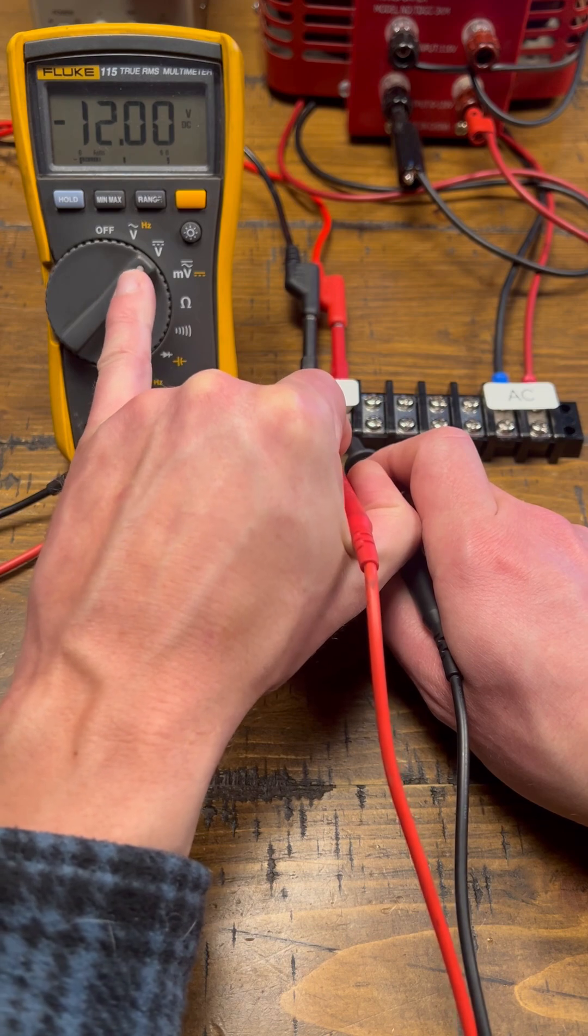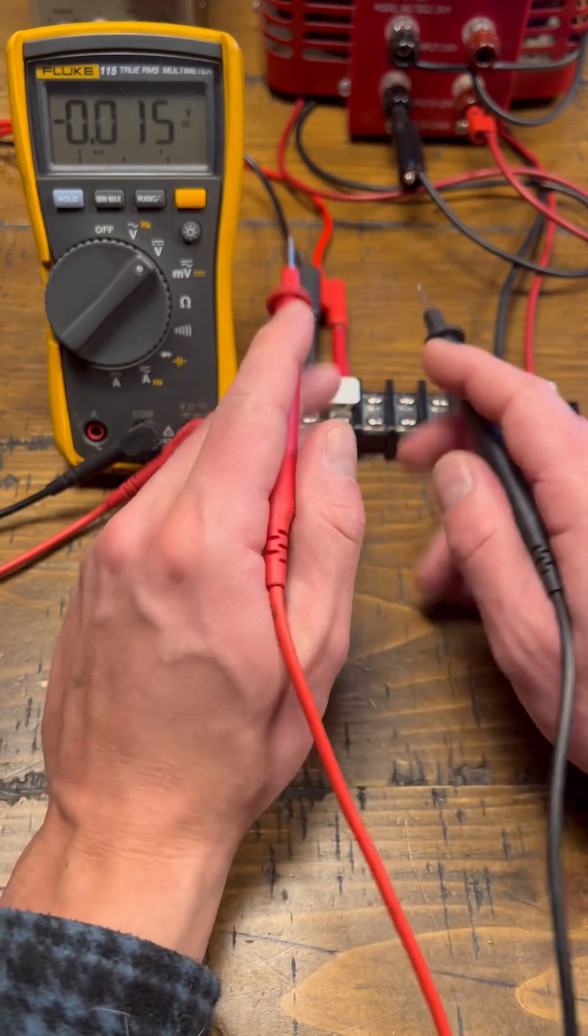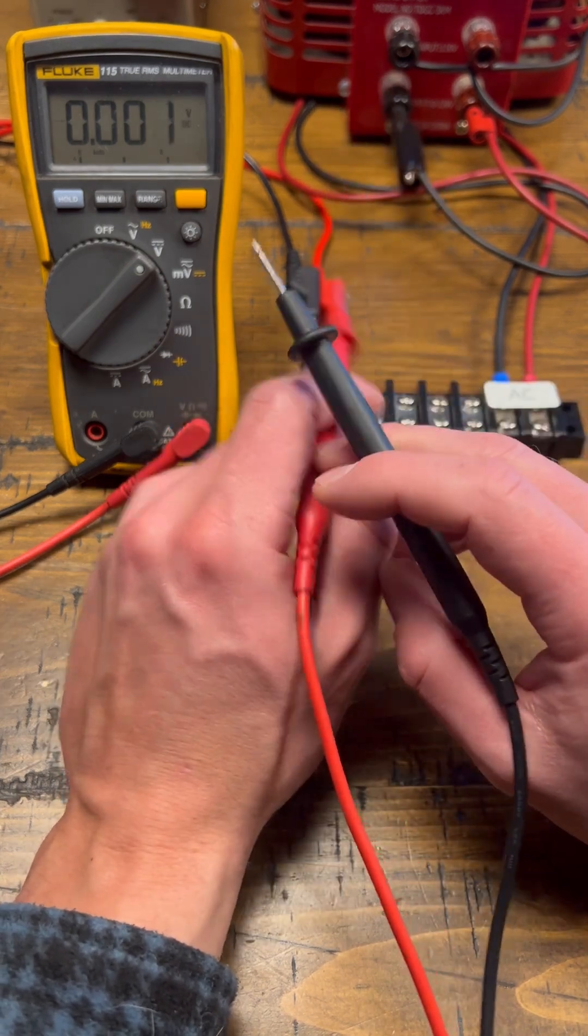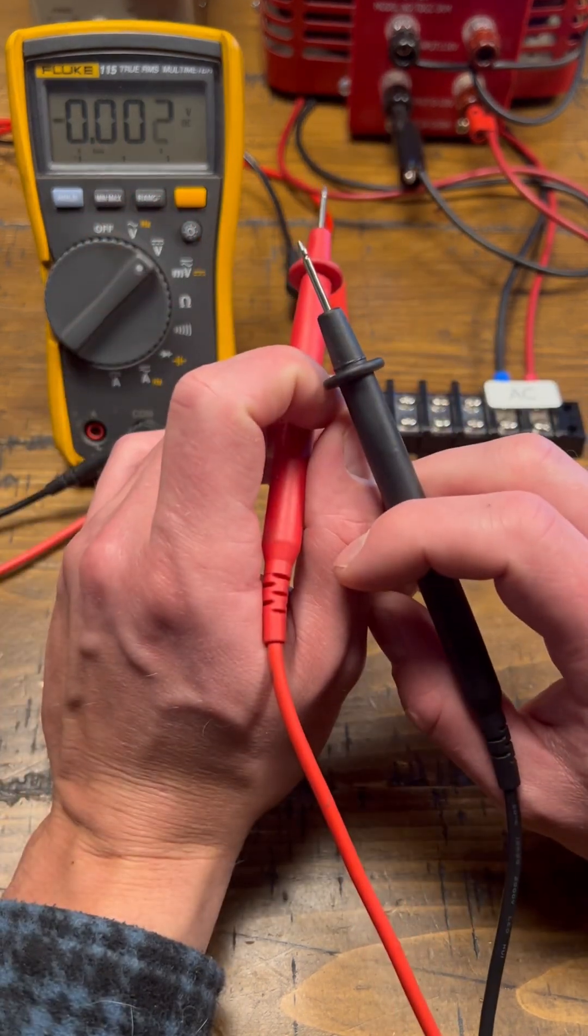but you'll see that negative sign pop up and that's the meter trying to tell me that in my DC circuit polarity is reversed somewhere, either with my leads or my circuit. So we'll want to pay attention to that negative sign popping up.